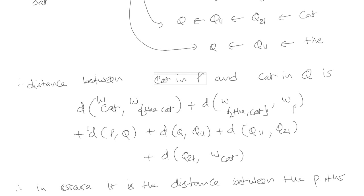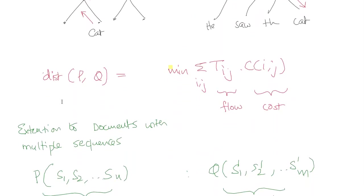Word Mover's Distance considers semantic similarities beyond just term frequencies and inverse document frequencies. The Earth Mover's Distance implementation is available in many languages with Python wrappers. Once you know how to compute cij, it's a linear optimization problem, and there are good approximations available if it becomes computationally prohibitive. This has been a discussion on how to incorporate both syntactical structures and semantics while computing text similarity.